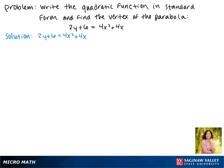First, all of the coefficients here can be divided by a factor of 2, so we'll do that on the left and on the right. We get y plus 3 equals 2x squared plus 2x.